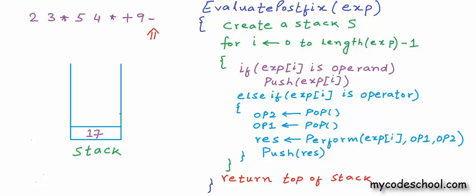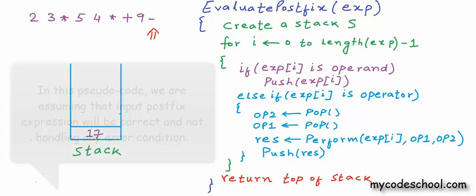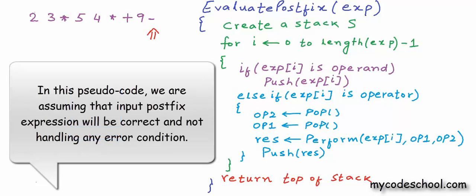You will have to take care of some parsing logic in actual implementation — an operand can be a number of multiple digits, and you will have a delimiter like space or comma, so parsing operands and operators will require some work. If you want to see my implementation, you can check the description of this video for a link. So this was postfix evaluation.